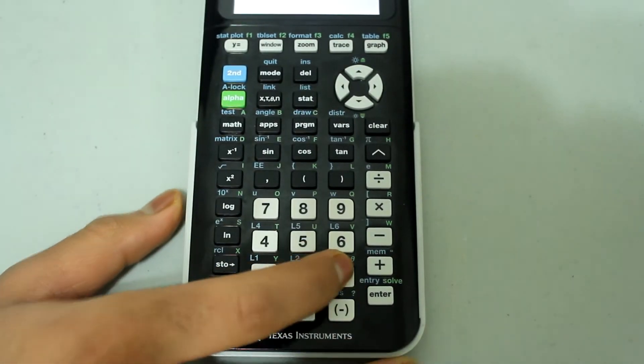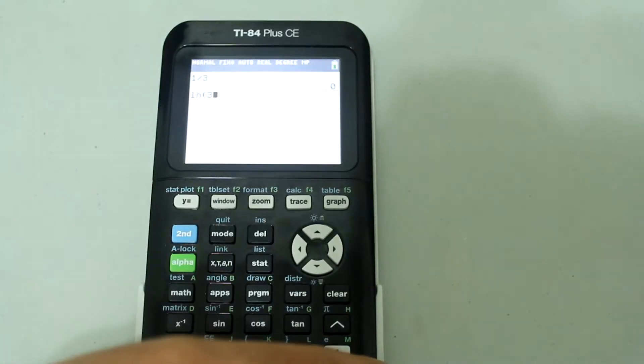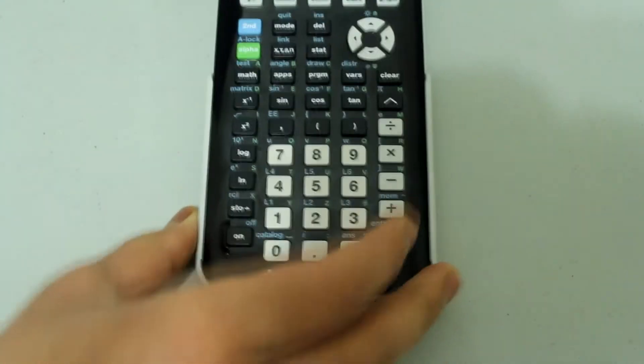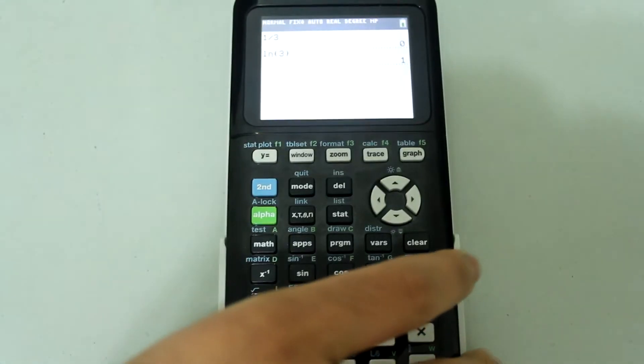Similarly if I did a natural log of 3, I'll have to close the parenthesis and press enter. I get 1.